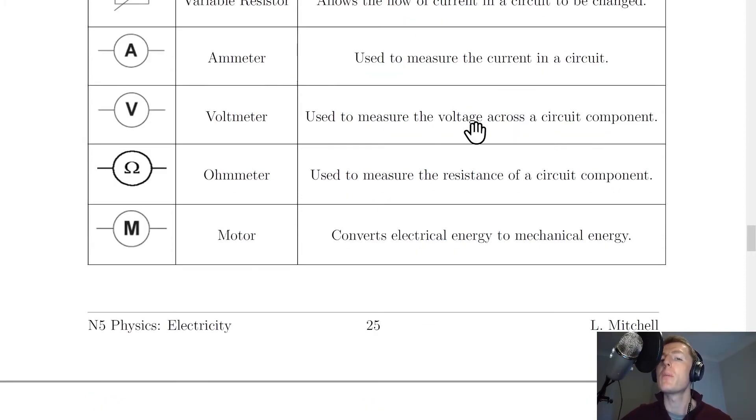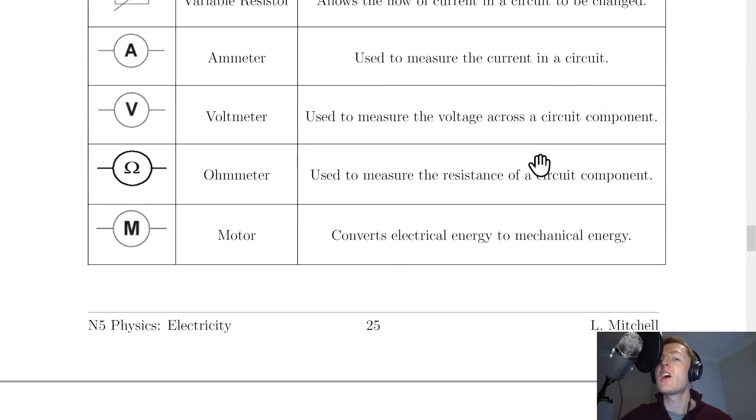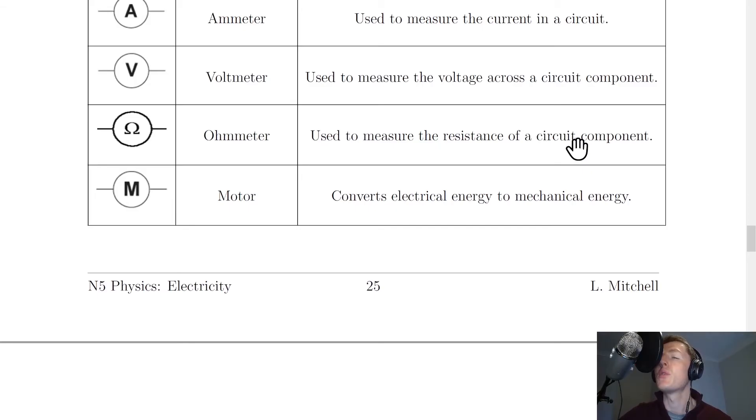When we talk about voltage though, we talk about the voltage across a circuit component. And lastly, when we talk about resistance, we say the resistance of a circuit component. So we say the current in or through, voltage across, and the resistance of something. Because remember, all circuit components will have a resistance. It's a property belonging to the component itself.